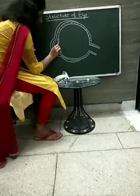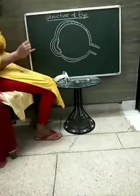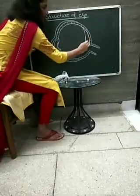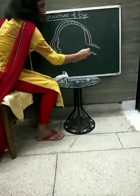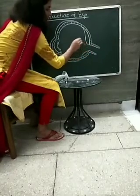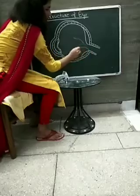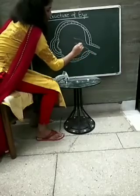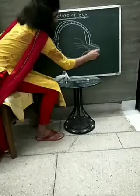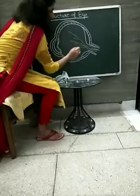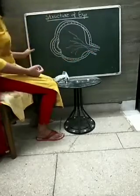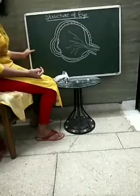And this black area is here. After that, now you have to draw this. Now our structure of eye is ready, and we have to draw these two lines.